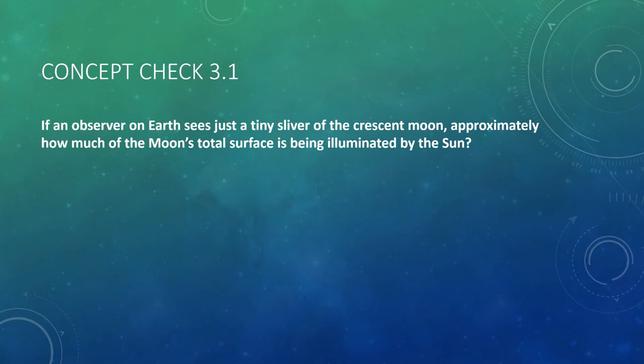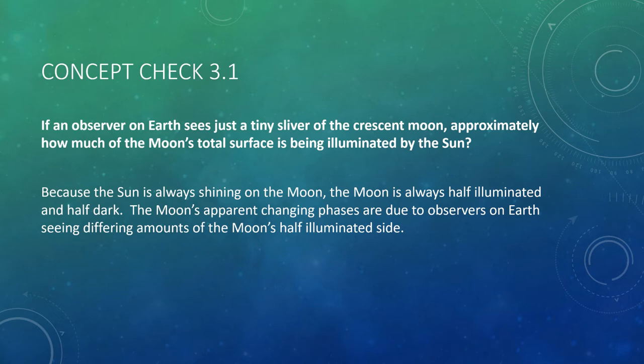Concept check: If an observer on Earth sees just a tiny sliver of the crescent moon, approximately how much of the moon's total surface is being illuminated by the sun? This is a trick question. Because the sun is always shining on the moon, the moon is always half illuminated and half dark. The moon's apparent changing phases are only due to observers on Earth seeing different amounts of the moon's illuminated side. So the answer is always half.